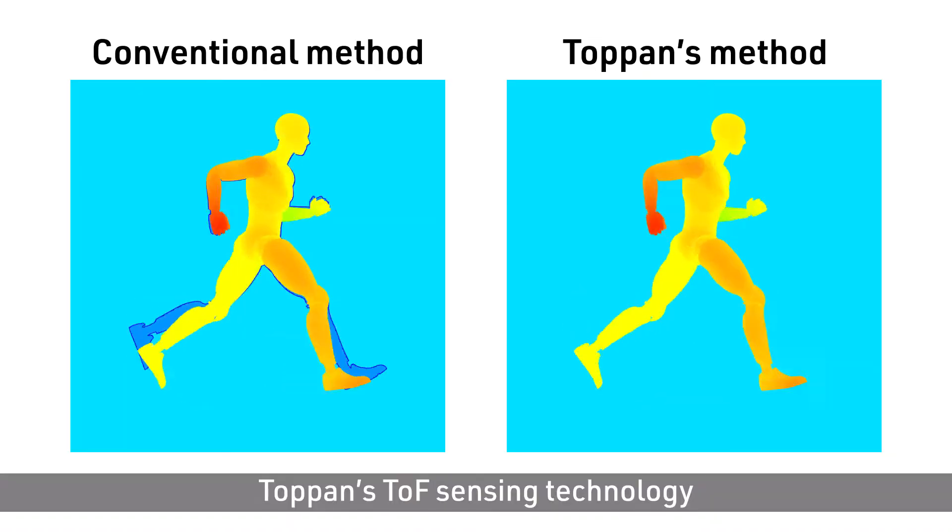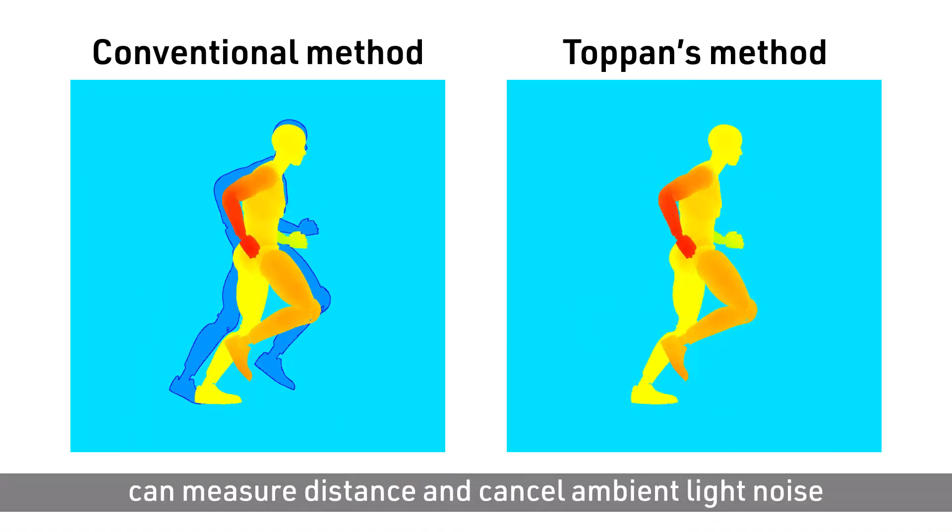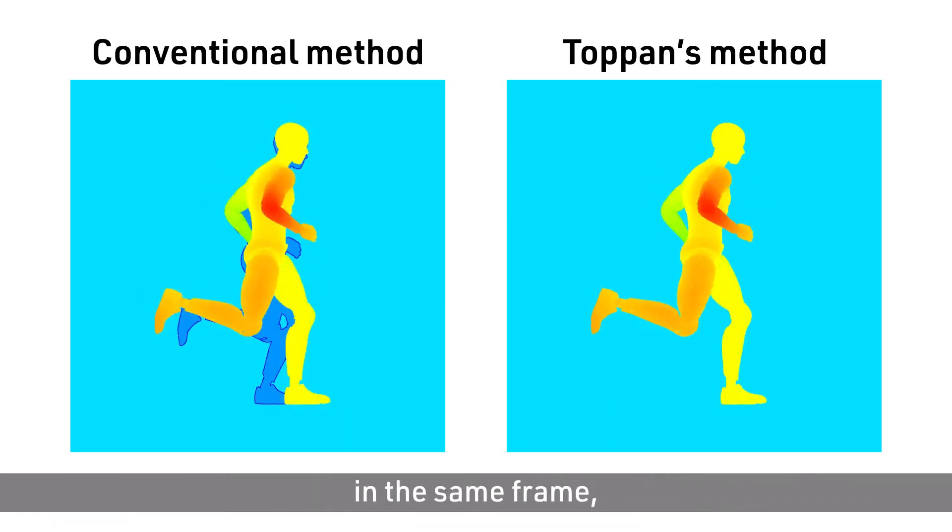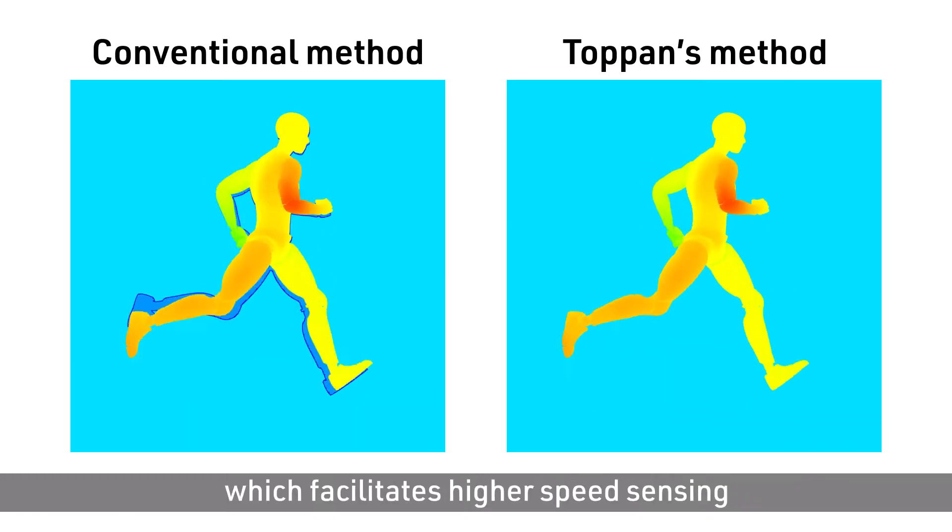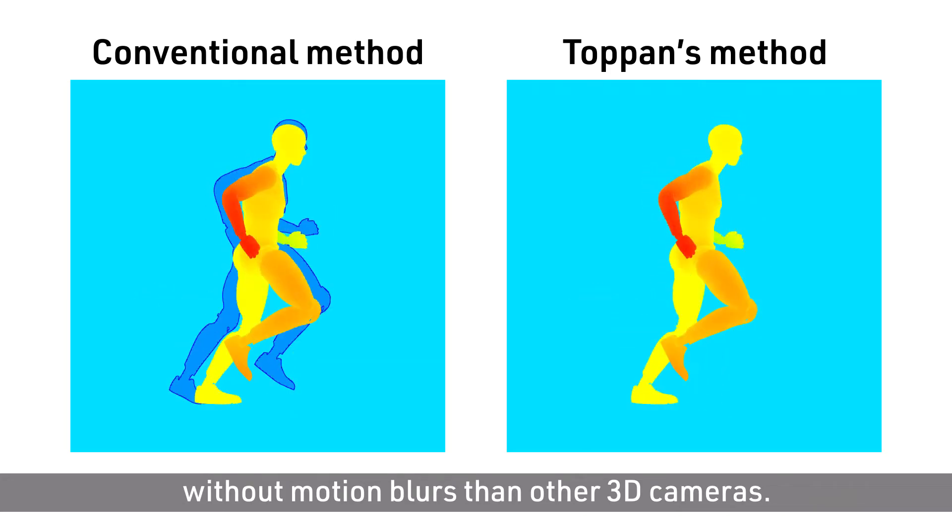Toppan's TOF sensing technology can measure distance and cancel ambient light noise in the same frame, which facilitates higher speed sensing without motion blurs than other 3D cameras.